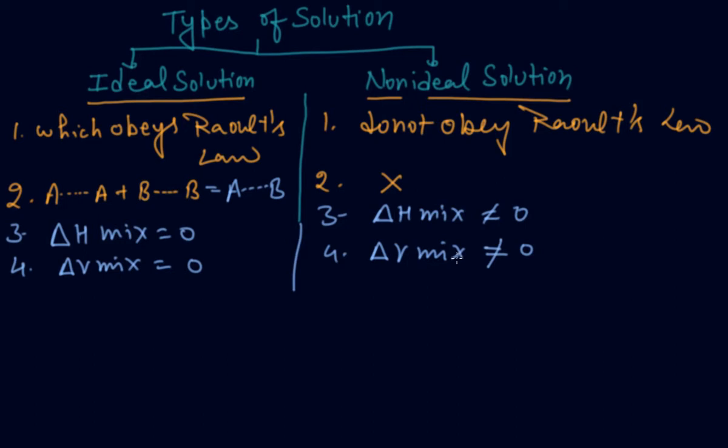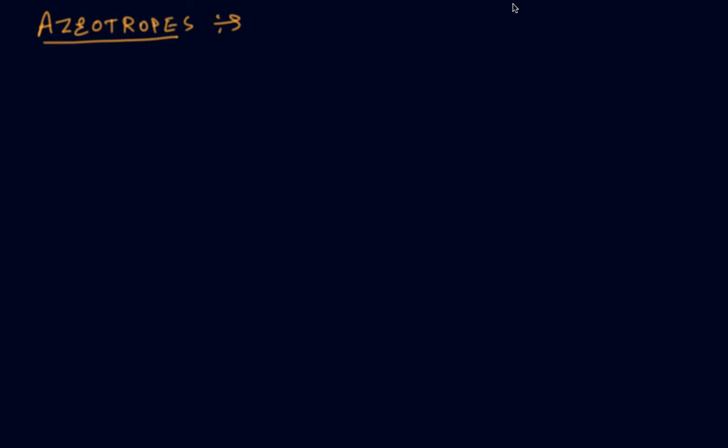Non-ideal solutions do not obey Raoult's law, and Raoult's law I already explained you. Now come to the next point: Azeotropes. Azeotropes are the constant boiling mixture. When we mix the two components, their boiling will get the same.